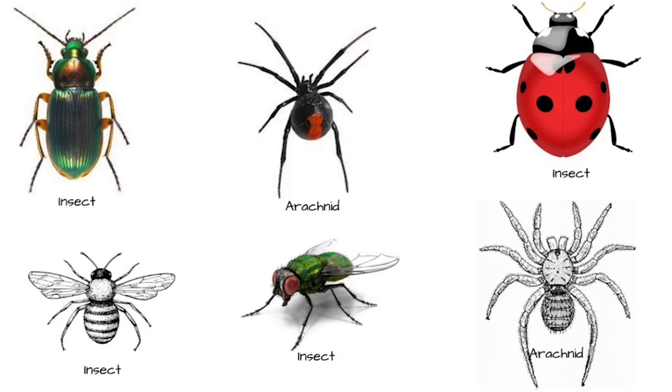Look at these answers and compare them to your own. In this lesson you are going to be making your own bugs — one insect and one arachnid. Here I have an insect that I made. It has three body parts and six legs. Along with this, you are also going to be making an arachnid.